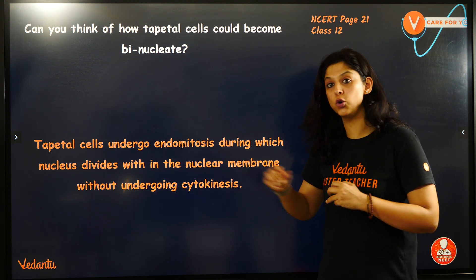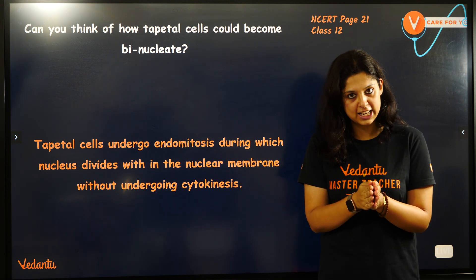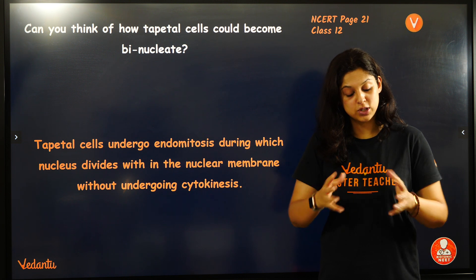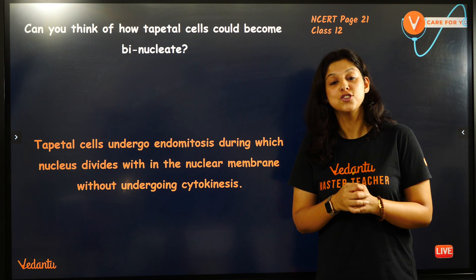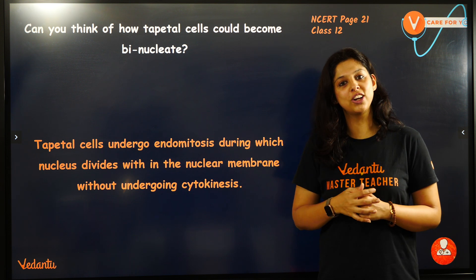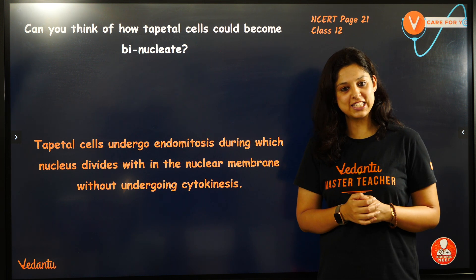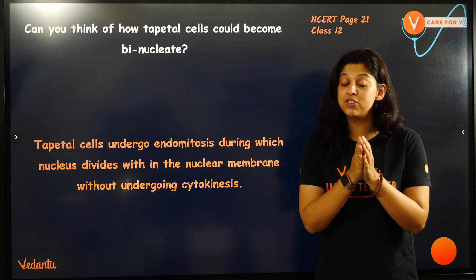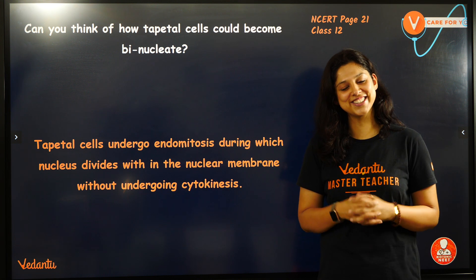The process is called endomitosis, jis me division of the cell ho raha hai but it is not dividing into two cells. Endomitosis ki wajah se polyploidy, or increase in the number of the ploidy level of the cell hota hai. The nucleus divides with the nuclear membrane without undergoing cytokinesis.